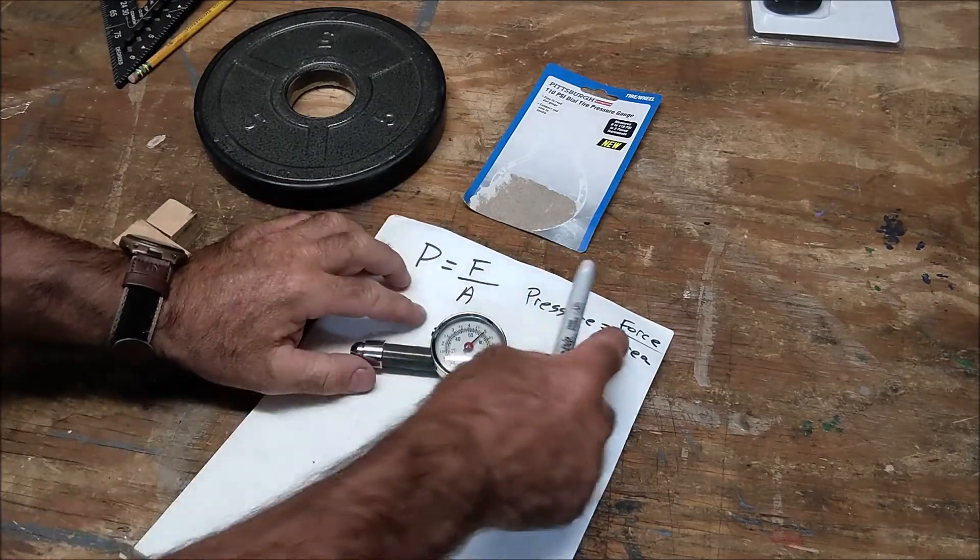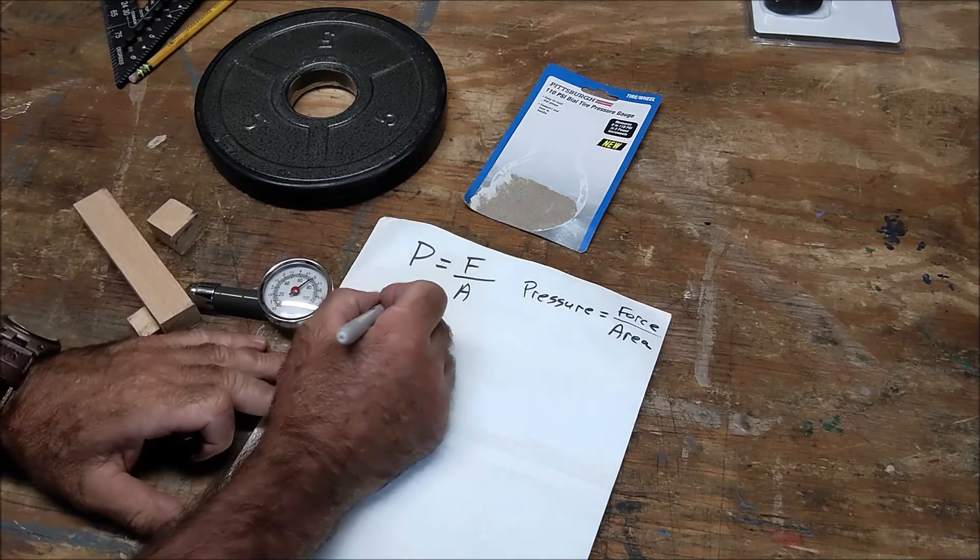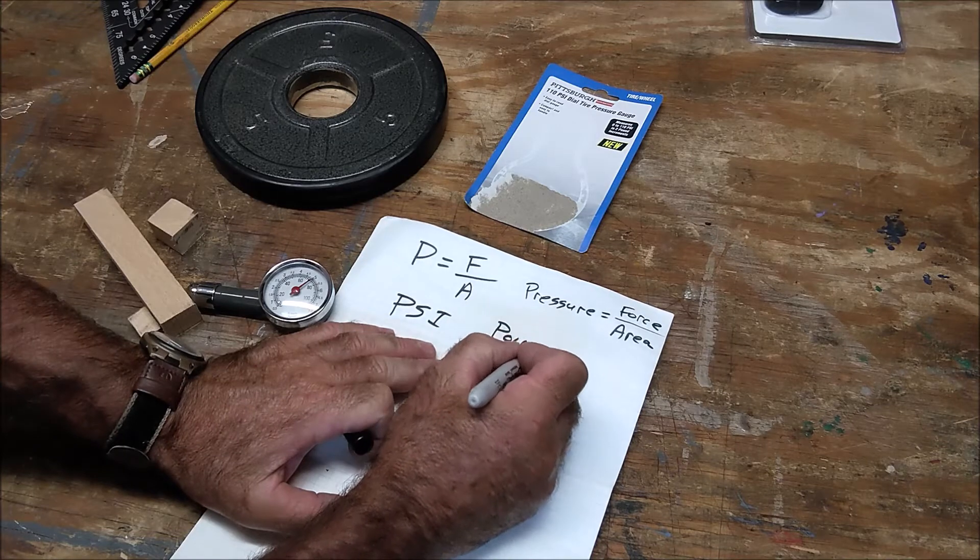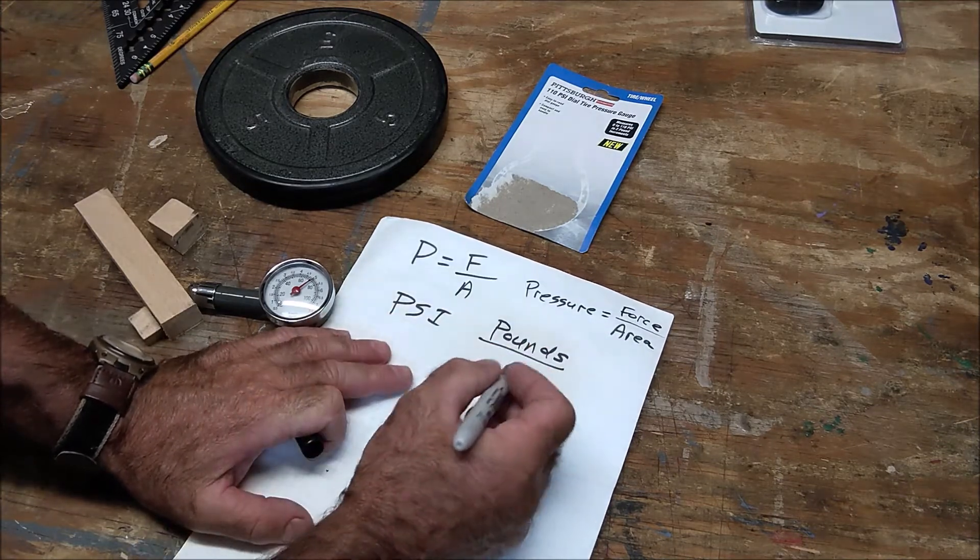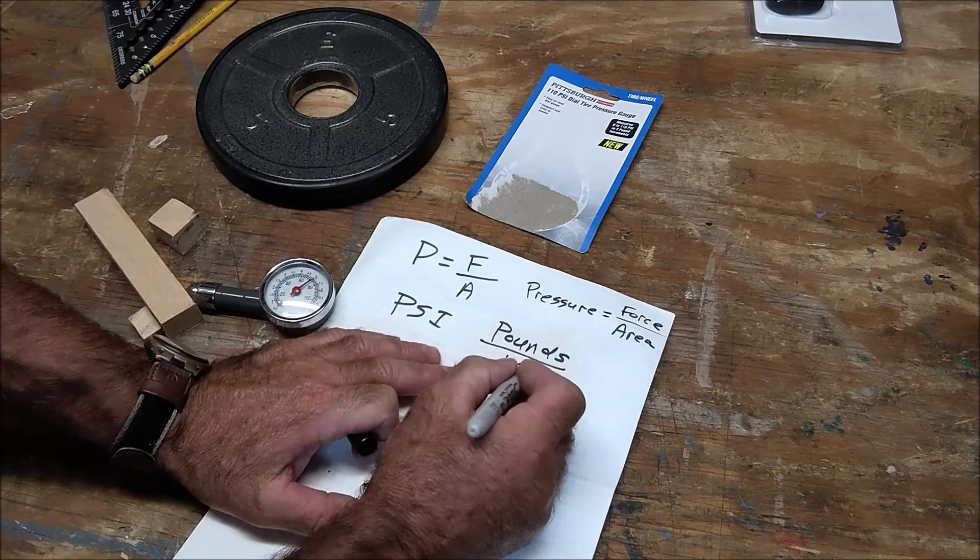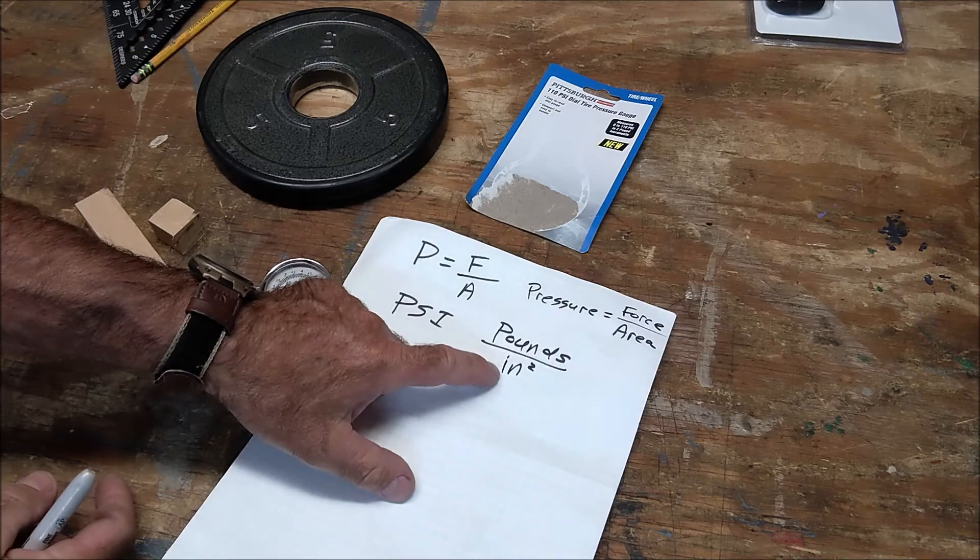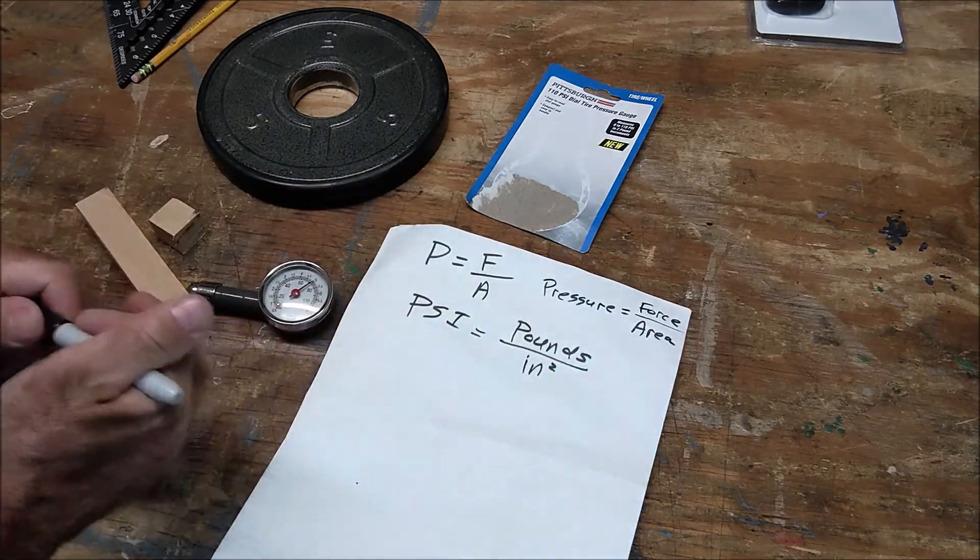So pressure is equal to force over an area and on this gauge we're in psi in the U.S. and that's going to be pounds per square inch. So it's going to be pounds over square inches. So if you figure out the area that's pushing down and the pounds you figure out your pressure or your psi. So here's an example.